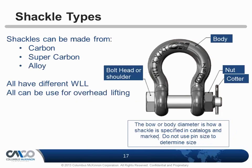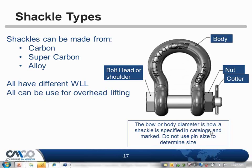Shackles are made from three material types: carbon, super carbon — which is specific to CM only — and alloy shackles. All have different working load limits and all can be used for overhead lifting. Some confusion arises because in the chain industry, only alloy chain can be used for overhead lifting. But shackles are not chain — you are allowed to use carbon, super carbon, or alloy. It's based on your preference and application.